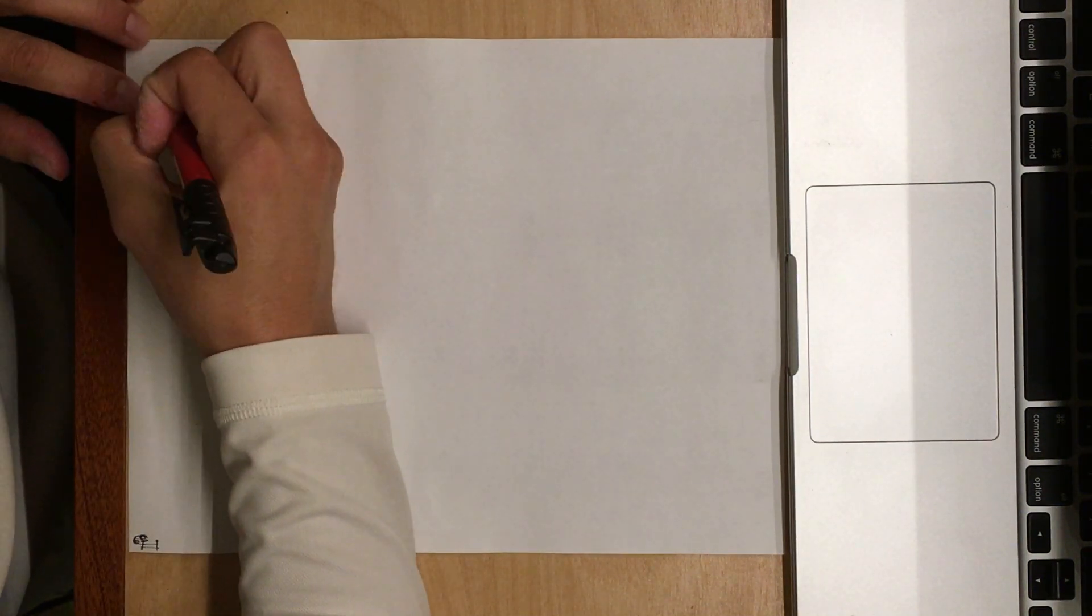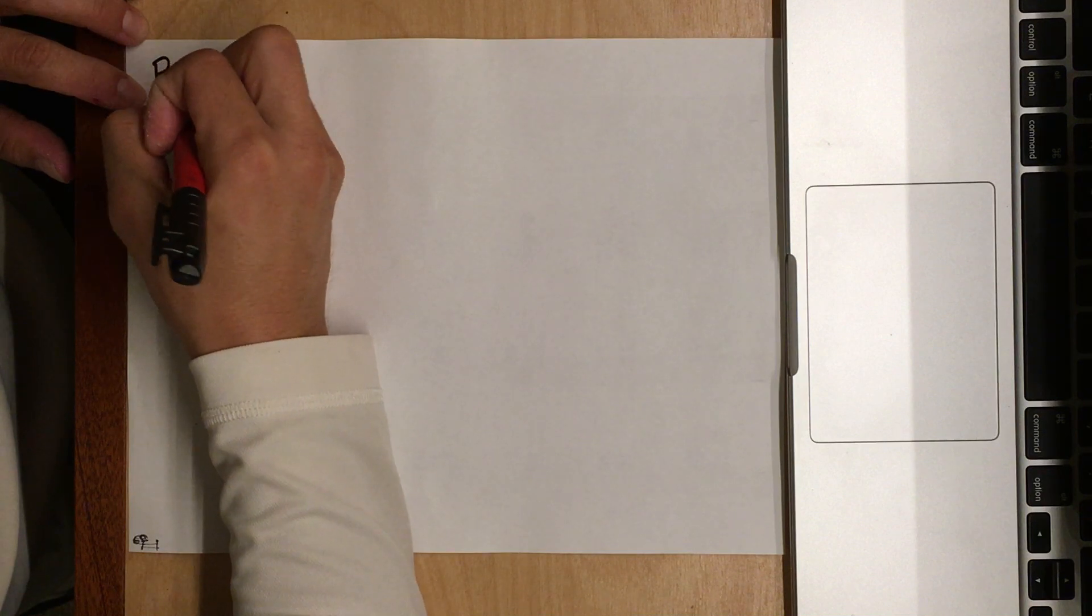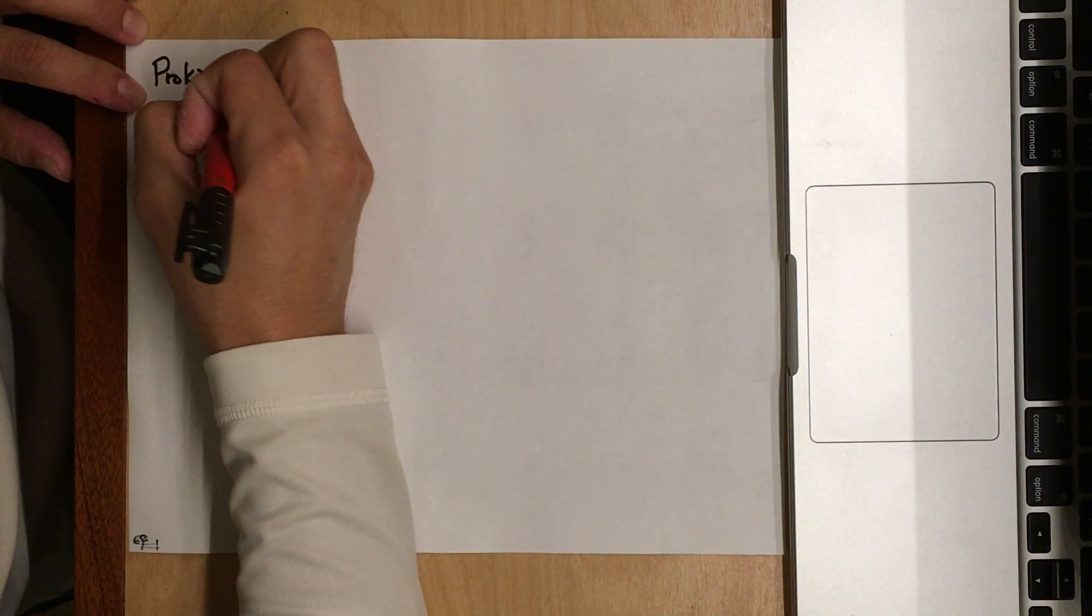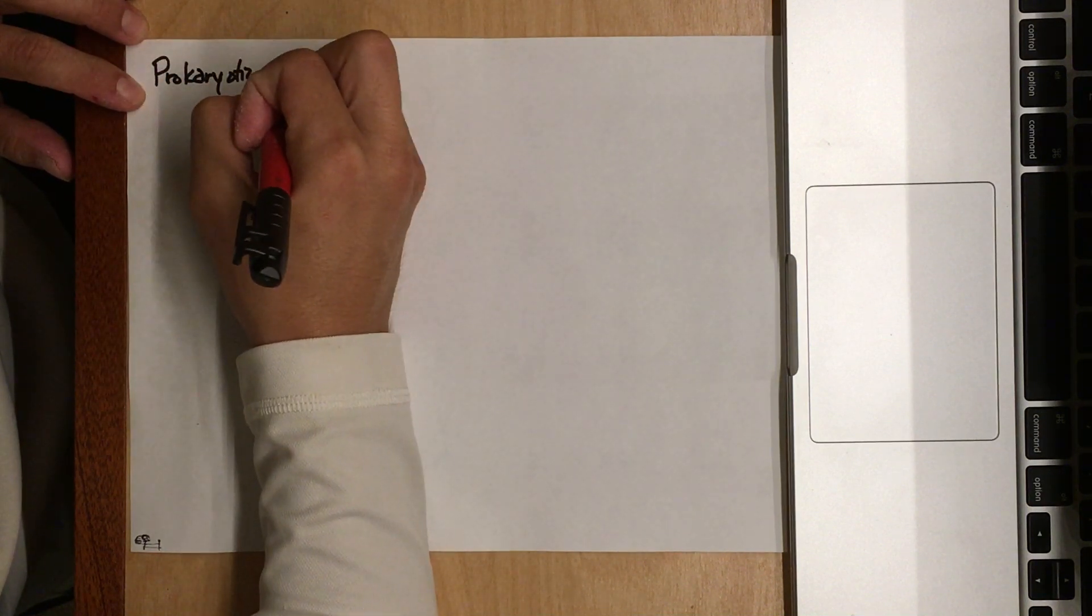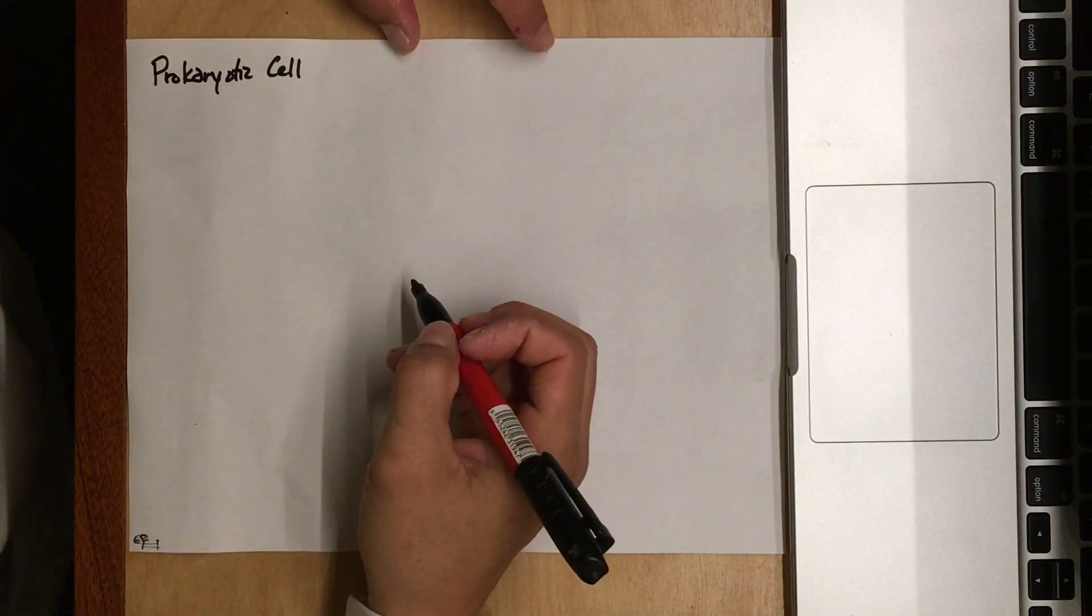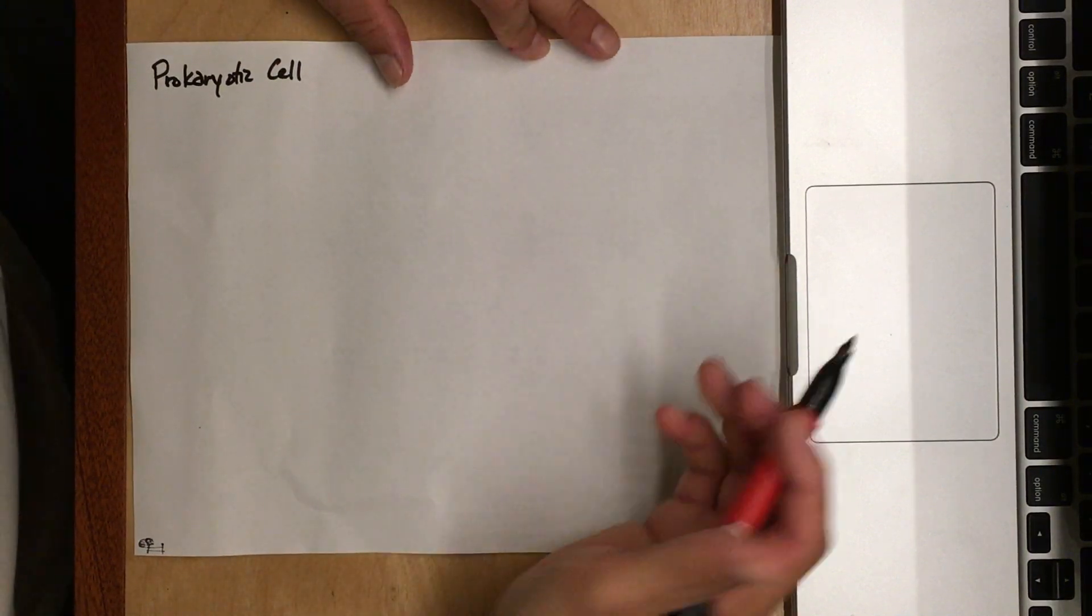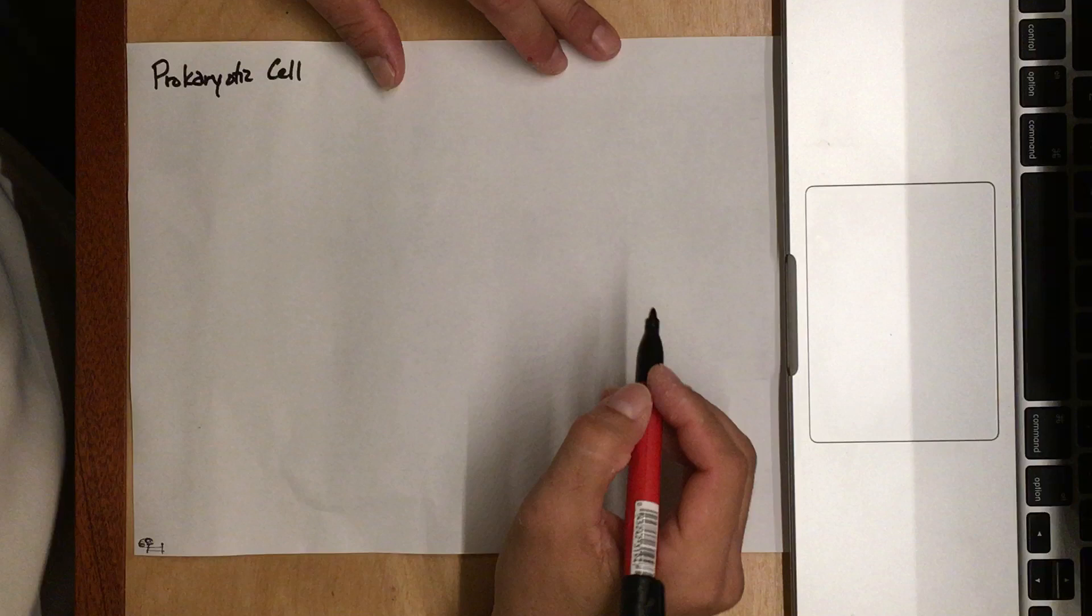Okay, so we're going to make a drawing of a prokaryotic cell. There are pictures in your book and notes that are really pretty and very nice.